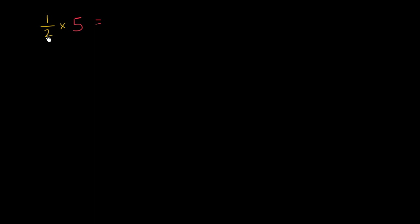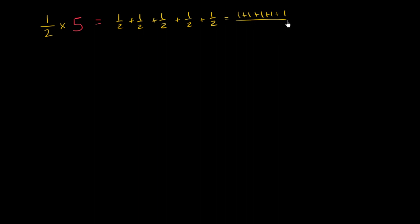Let's think about what 1/2 times 5 represents. One way to think about it is that this could be five 1/2s added together. So you could view this as 1/2 plus 1/2 plus 1/2 plus 1/2 plus 1/2, which is the same thing as 1 plus 1 plus 1 plus 1 plus 1 over 2, which is equal to 5 halves.